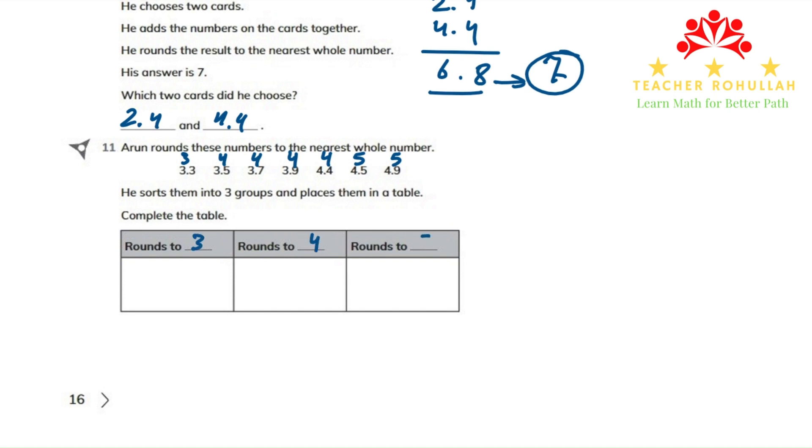and the numbers that round to 5. The numbers that round to 4 are 3.5, 3.7, 3.9, and 4.4. And the numbers that round to 5 are 4.5 and 4.9.